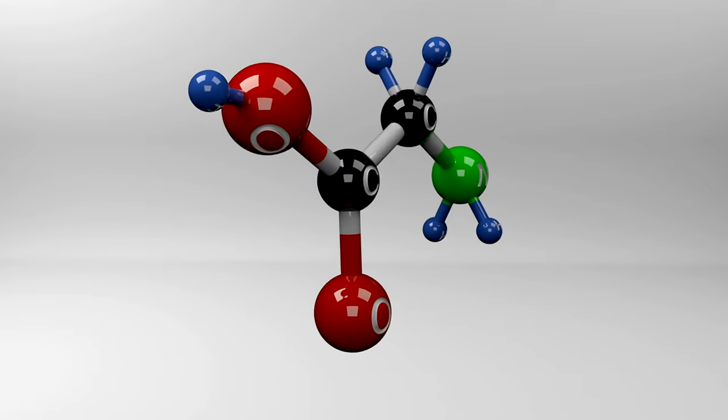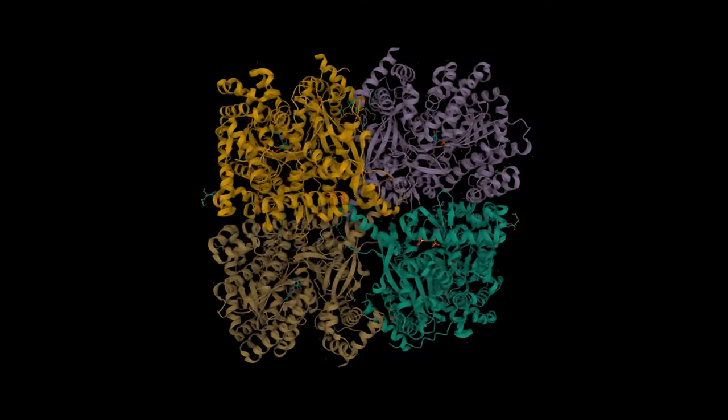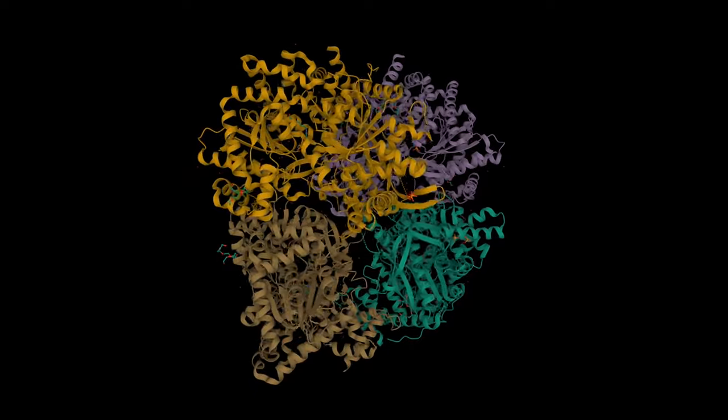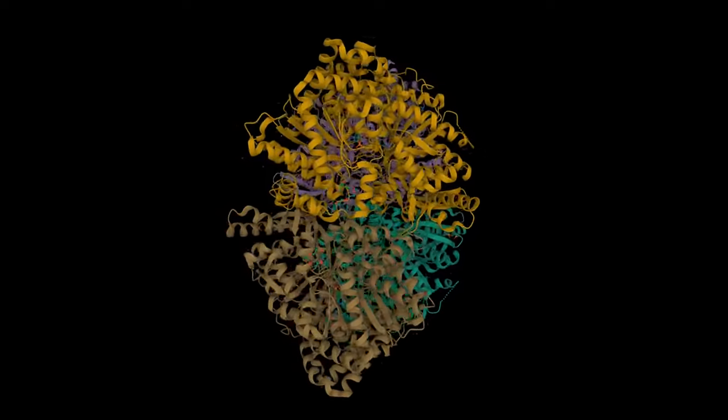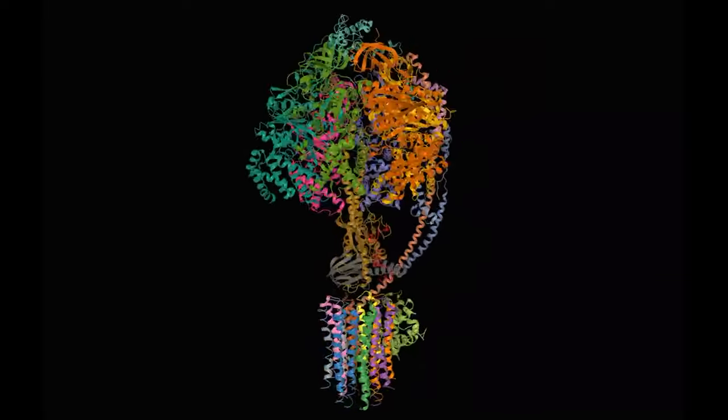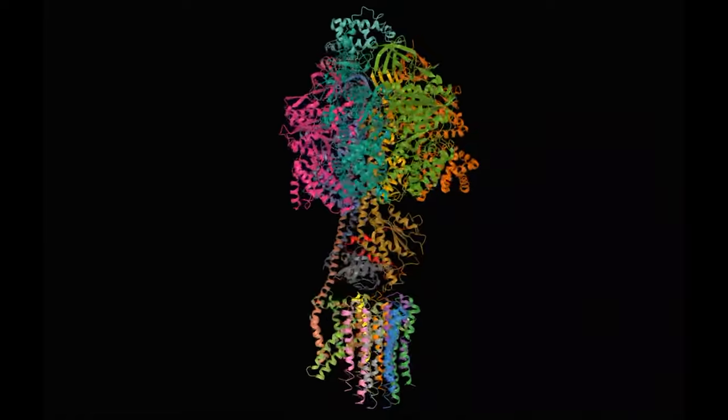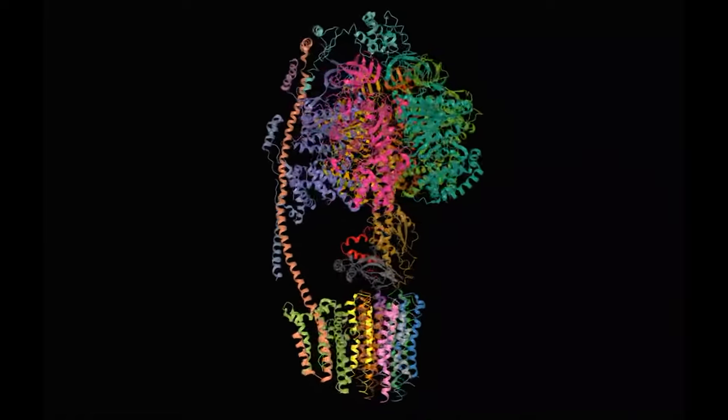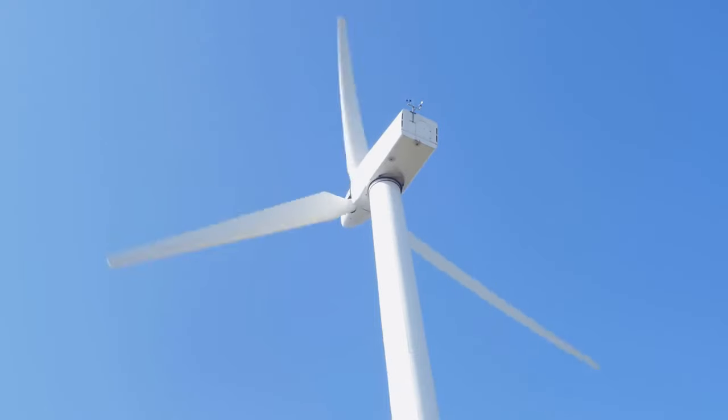But the real star of the show is glycogen. Stored in your muscles and liver, glycogen is your body's preferred source of energy during these early miles. Think of it as your body's own high-octane fuel. As you run, enzymes break down glycogen into glucose, which is then used to produce ATP, the energy currency of your cells. This process is beautifully efficient, keeping you moving without fatigue.